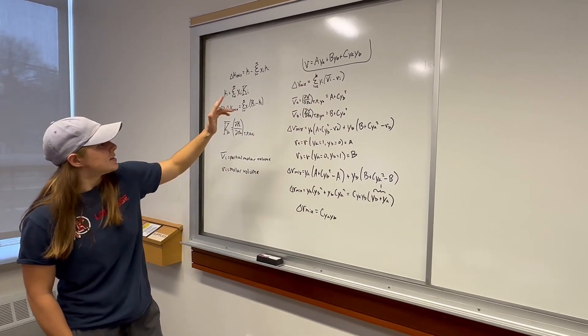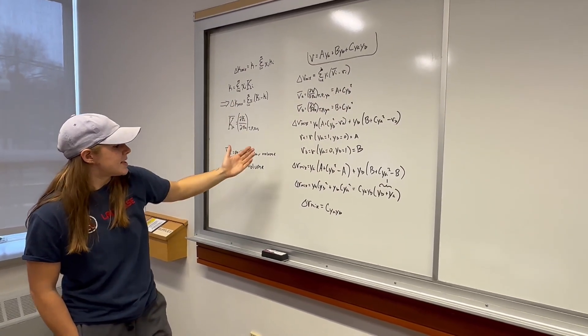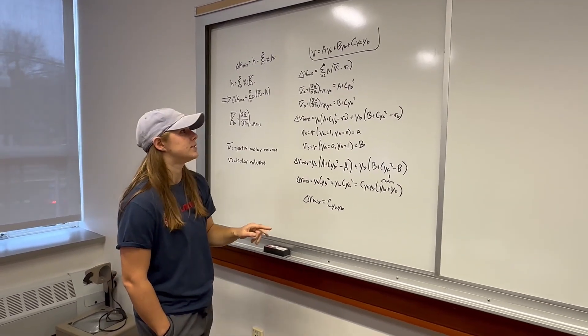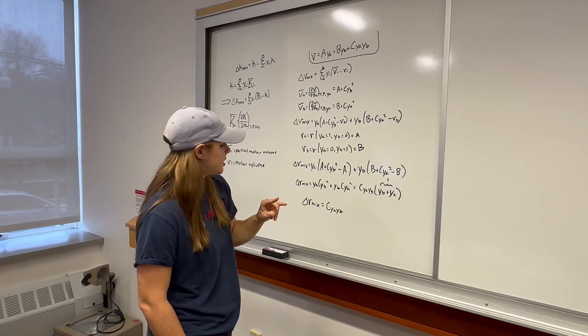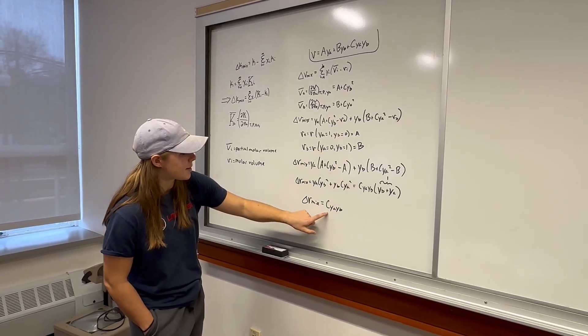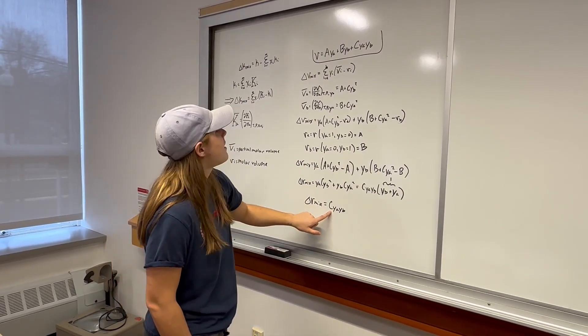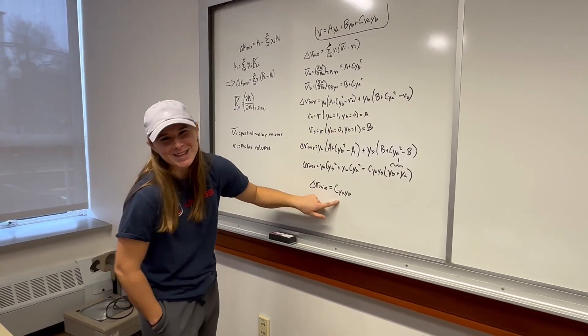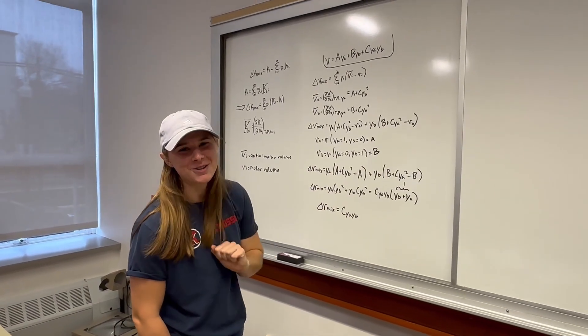Those coefficients and values can then be used to calculate the change in molar volume of mixing, which in the case of two species can be represented by a coefficient multiplied by the mole fraction of one component multiplied by the mole fraction of the other component.